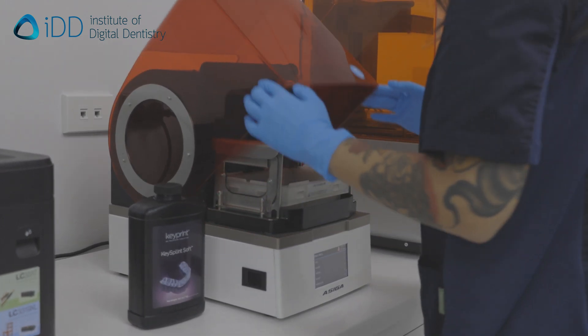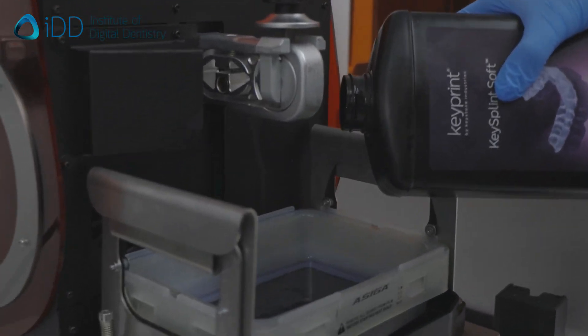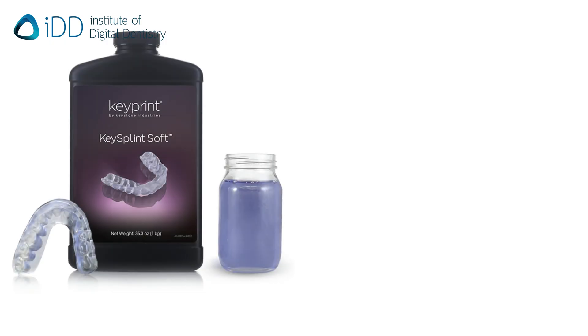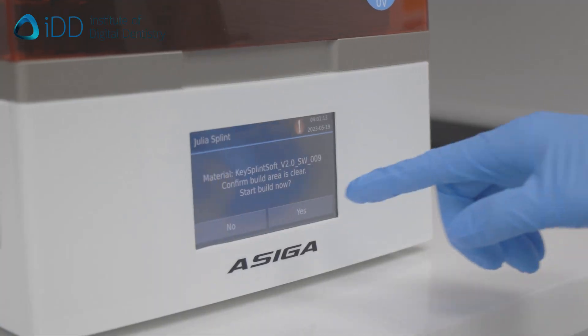We then proceed to print the splint. Pour the splint resin material into the printer and the correct tray. In this case, we are using KeySplint Soft by Keystone Industries. Start the print process.